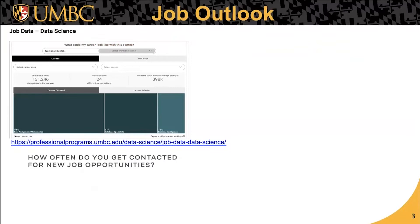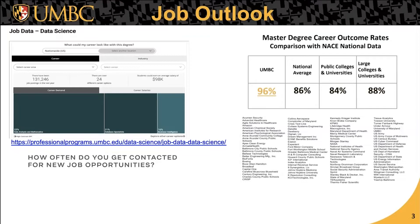The job market has been really great for data science since I joined this program about five years ago. The average salary is around $100K for people with a master's degree, and there are tens of thousands of jobs in the field with titles like data engineer and machine learning engineer. We are extremely proud that 96% of our graduates find jobs right after — or even before — graduation. Here you see a brand new list of all the companies our graduates are employed by.